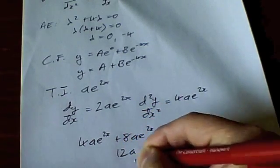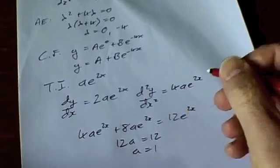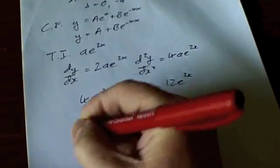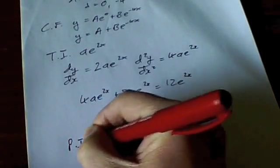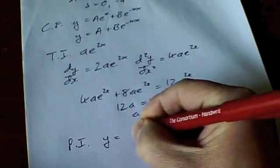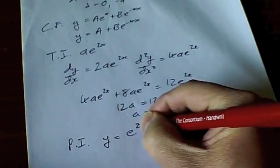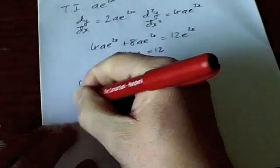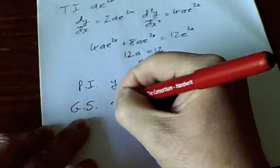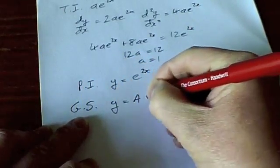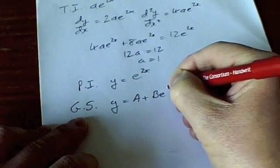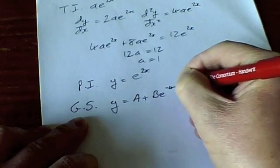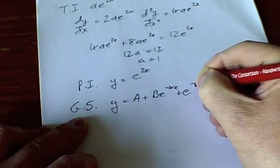So my particular integral then is going to be y equals e^(2x) and that leaves my general solution as y equals A plus Be^(-4x) plus e^(2x).